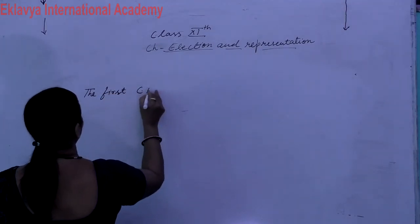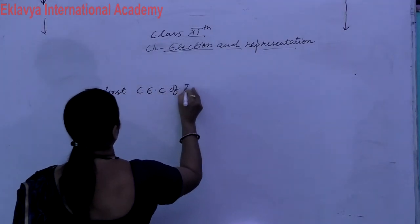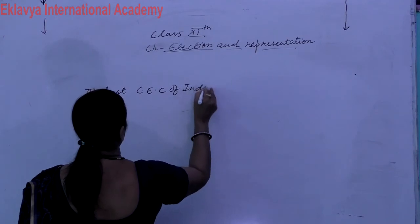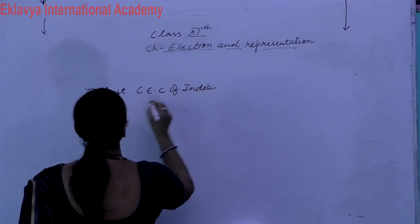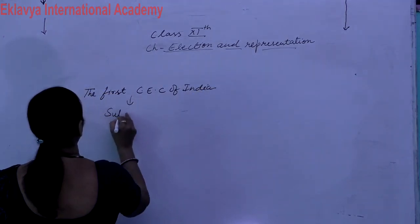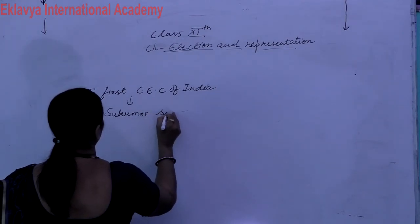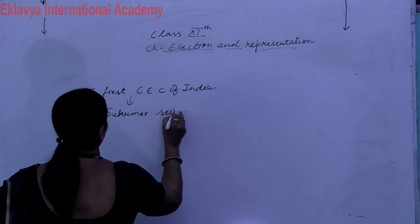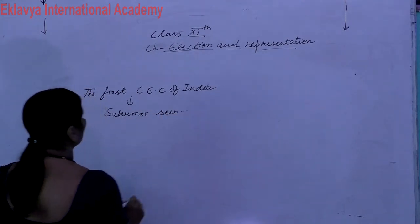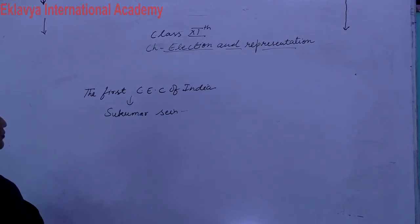The first CEC of India था Sukumar Sen. सुकुमार सेन जो थे, वो first Chief Election Commissioner of India थे।